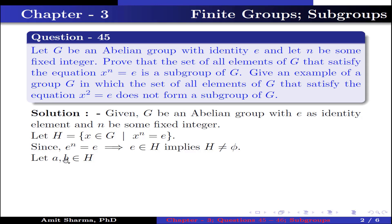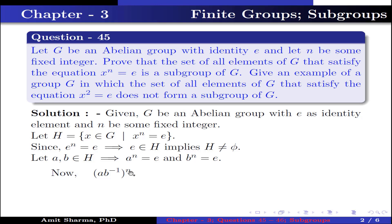Let a, b belong to H. This implies a to the power n equals identity and b to the power n equals identity. Now (ab⁻¹) to the power n can be written as a to the power n times b inverse to the power n — because G is an Abelian group.